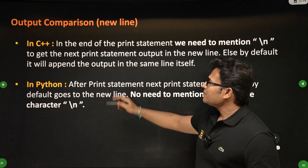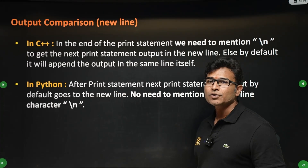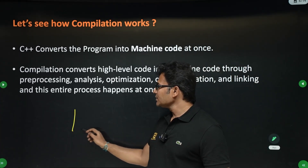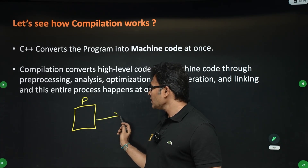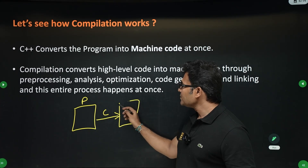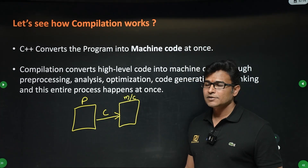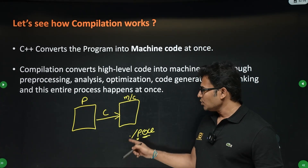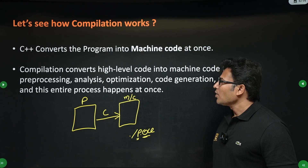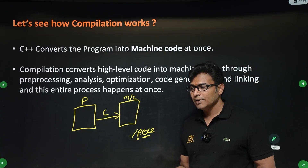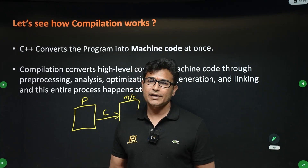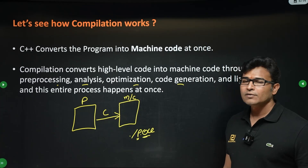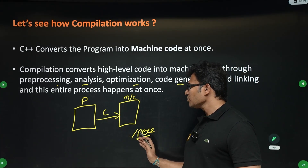So the difference between C++ and Python: in C++ you have to explicitly give a newline character, in Python you don't. Now how does the compiler work? In C++, the compiler takes the entire program and converts it into machine language — a .exe file — and you can execute it by running ./p.exe. The phases are: pre-processing, syntax analysis, semantic analysis, code optimization, and code generation. Once compilation is done, you see the output.